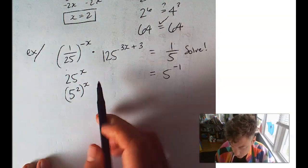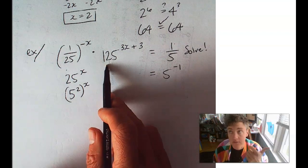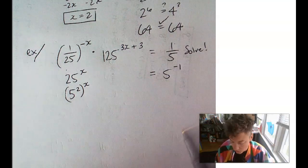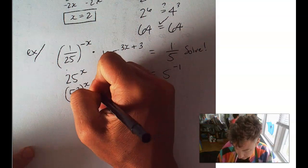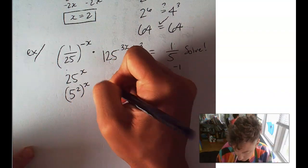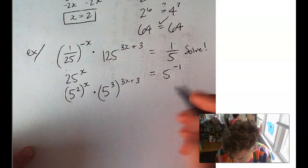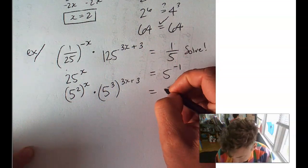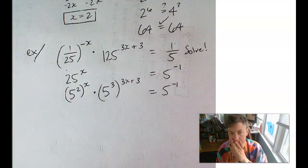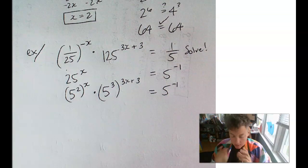5 squared to the x. And 125 is 5 times 5 is 25 times 5 is 125. So, this is 5 to the third to the 3x plus 3 equals, let me bring this guy down, 5 to the negative 1.